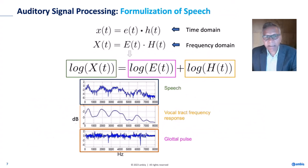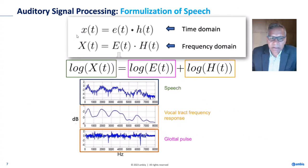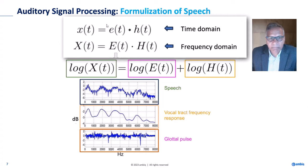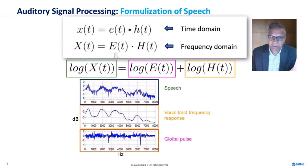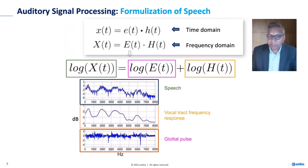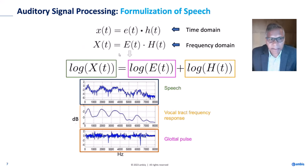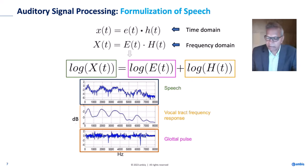Mathematically, when the signal comes in, we are convolving it with a filter — the glottal pulses are convolved with a filter in the time domain. In the frequency domain, convolution becomes multiplication, so we are multiplying the filter transfer function with the glottal pulse. To separate them, we take a log. By taking a log, instead of multiplication we can perform summation. That's the mathematical representation of how we separate the glottal pulses from the filter response.